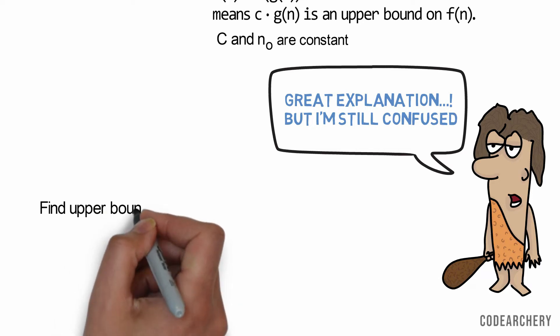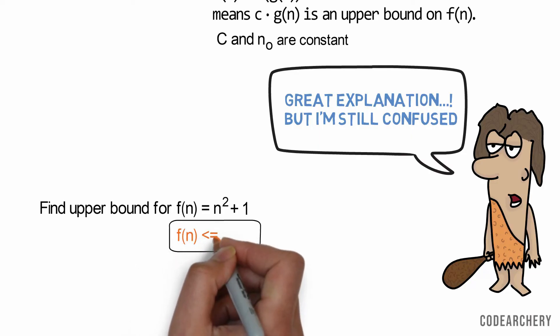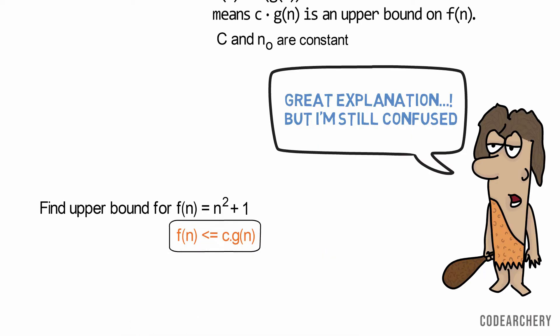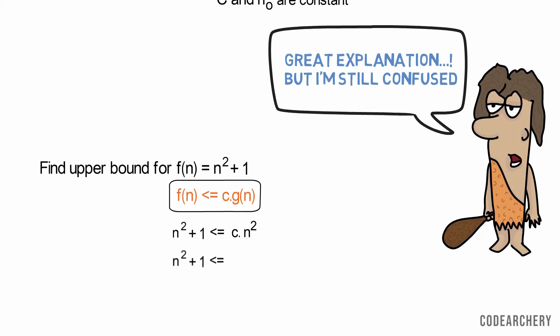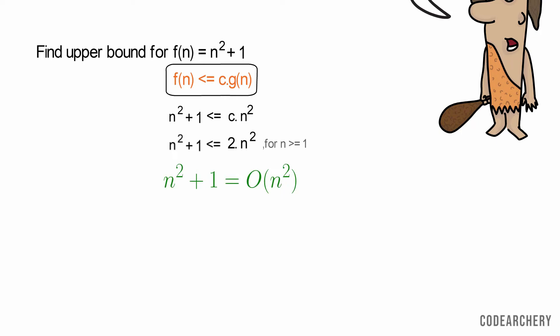Let's find an upper bound function for f(n) equals n² + 1. So we have to find an upper bound. We'll stick to the definition that is f(n) is less than or equal to c times g(n). Since our f(n) is a quadratic function, we will pick g(n) as a quadratic function that is n². If you do a little bit of trial and error, you will find that for c equals 2 and n is greater than or equal to 1, 2n² is the upper bound for n² + 1.